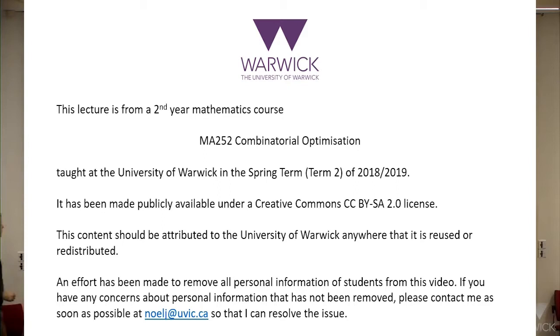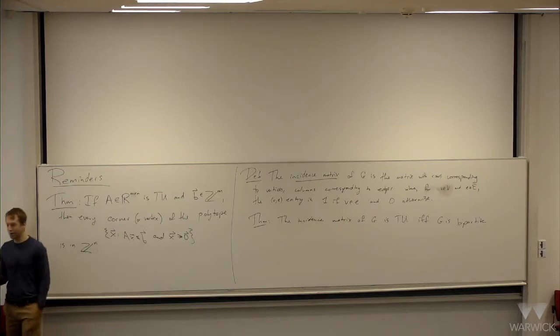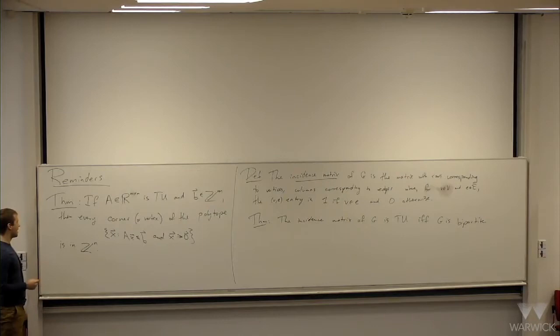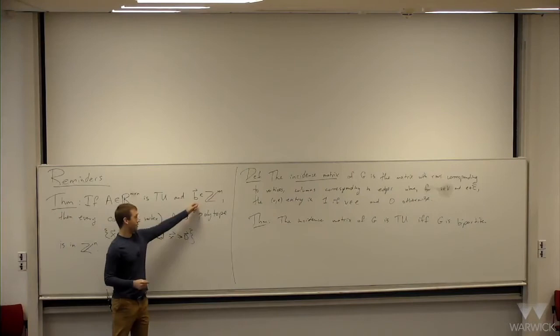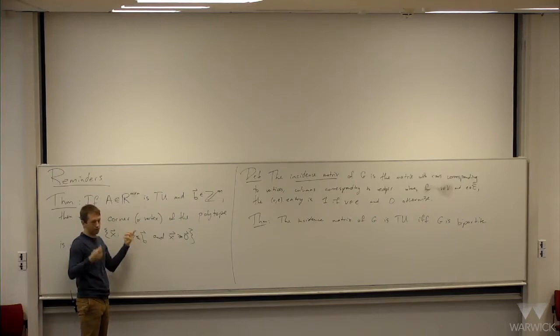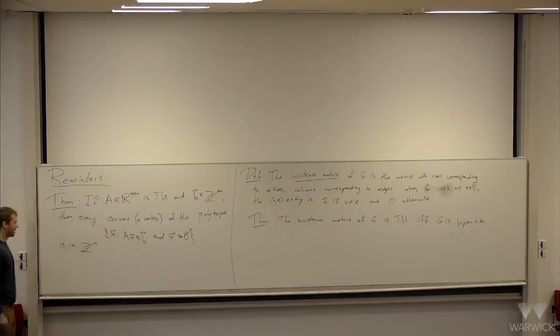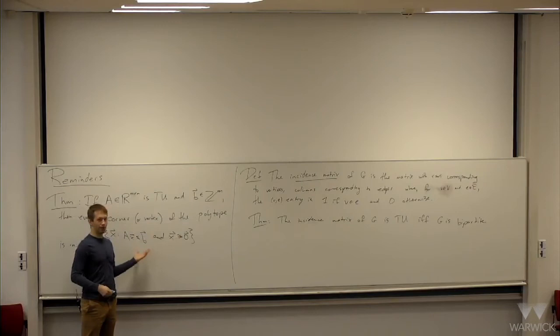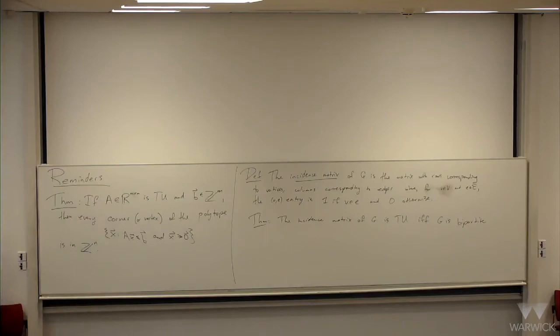Just to remind you about a few things from last Wednesday. We were talking about integer programs, totally unimodular matrices, and things like that. One thing we proved is that if you have a totally unimodular matrix and an integer vector b, and you look at this polytope with the usual linear constraints and x non-negative, then every corner of that polytope is actually an integer vector.